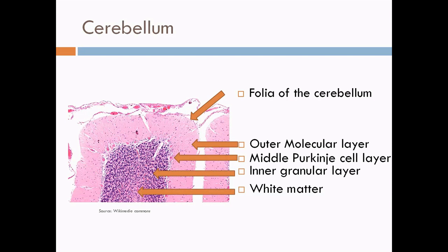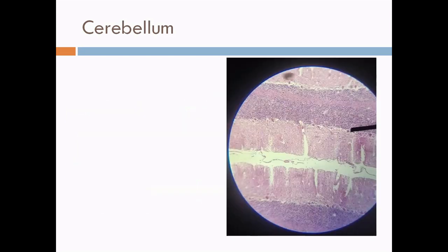This includes the mossy and the climbing fibers and the axons of the Purkinje cells. The outer molecular layer is made up of the dendritic arborizations of the Purkinje cells. We can also see stellate cells and basket cells in this layer. It is also called the plexiform layer.